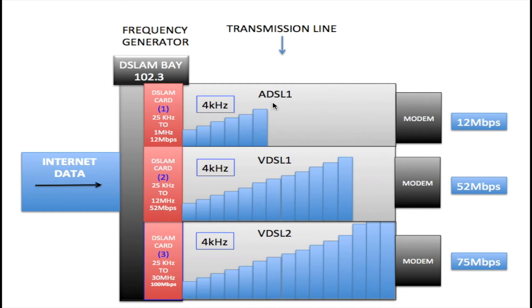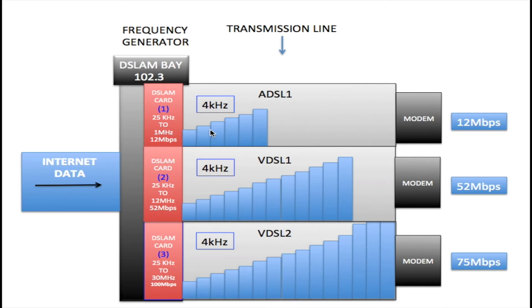Within each one of these bins we place 56 kilobits of data. Once 56 kilobits of data is placed into all the bins right up to 1 megahertz, you'll get 12 megabits of data being sent to the modem, because 12 megabits per second is what we get at 1 megahertz. That total is reached by adding up all the 56 kilobits of data within all of these bins right up to 1 megahertz.